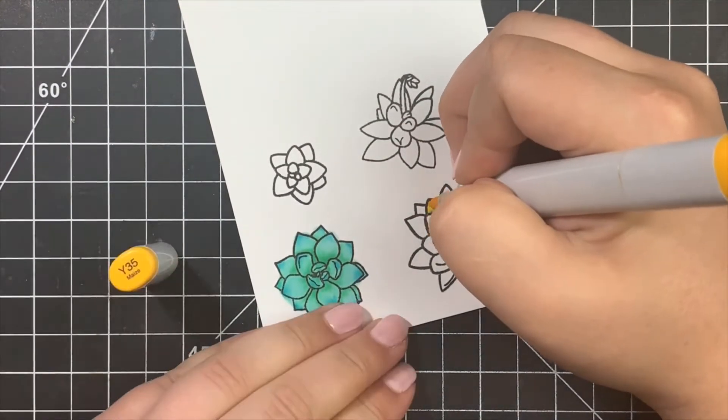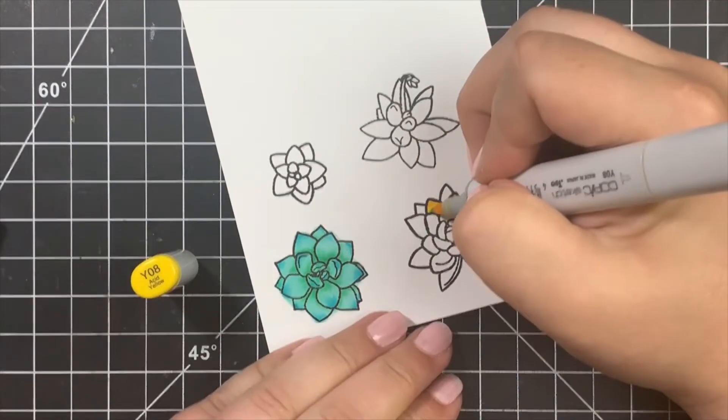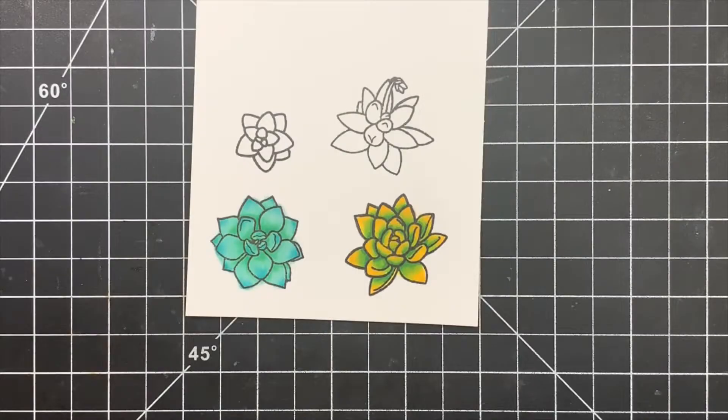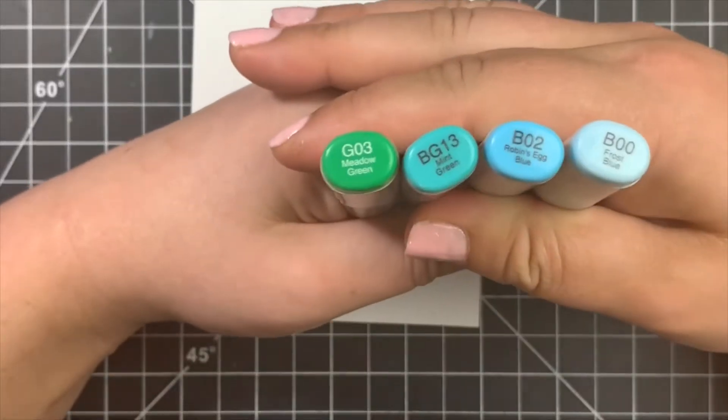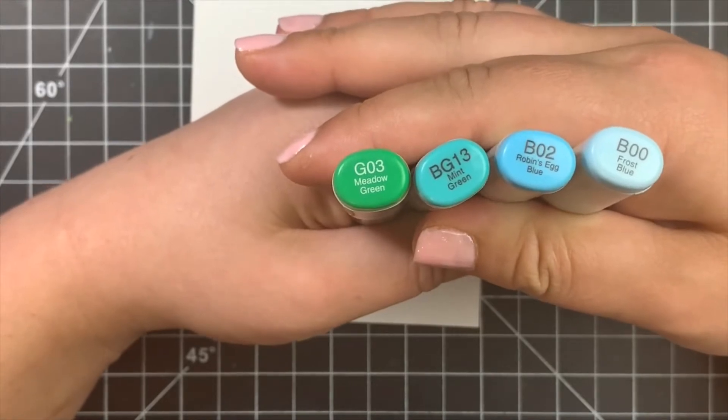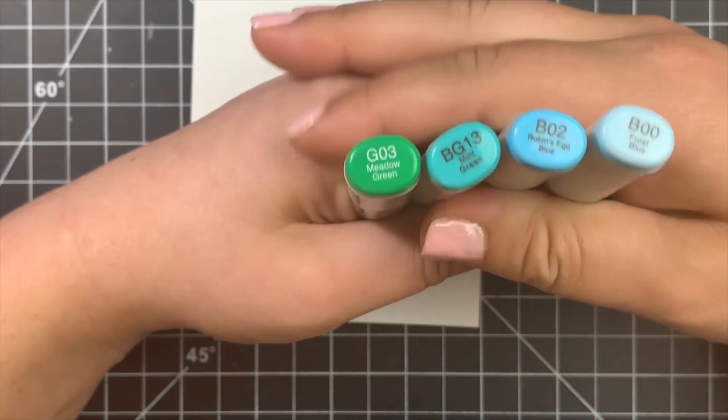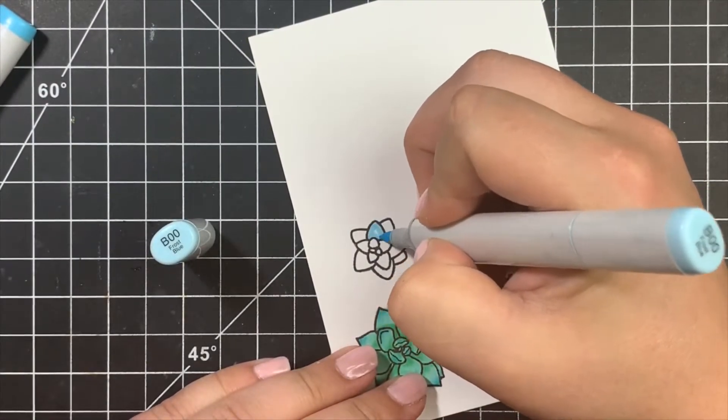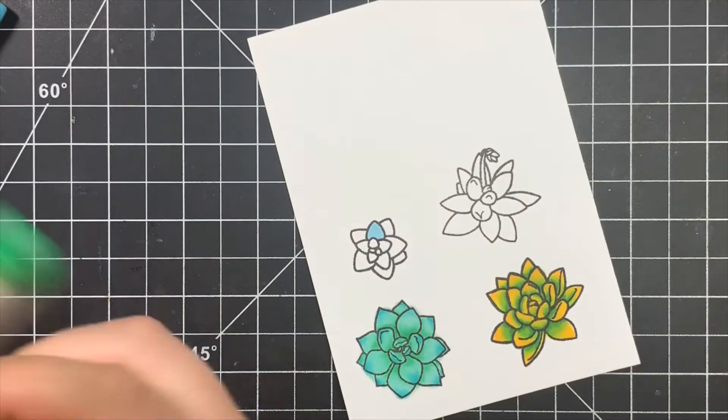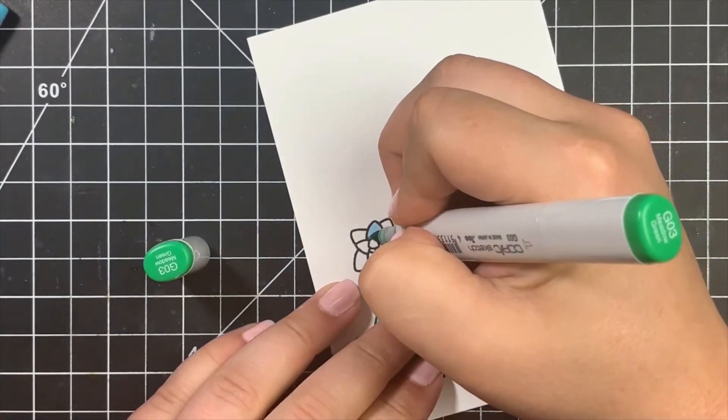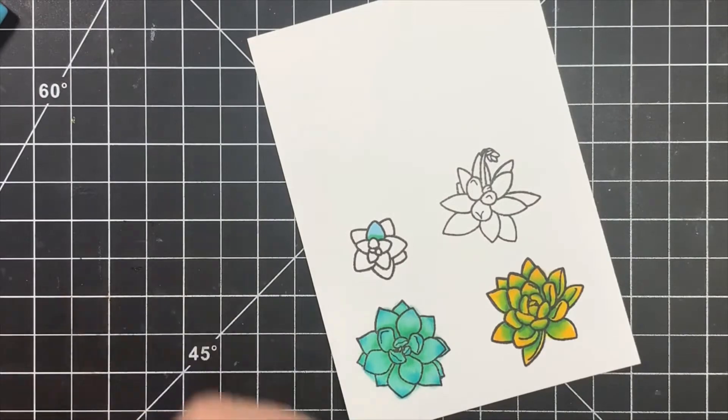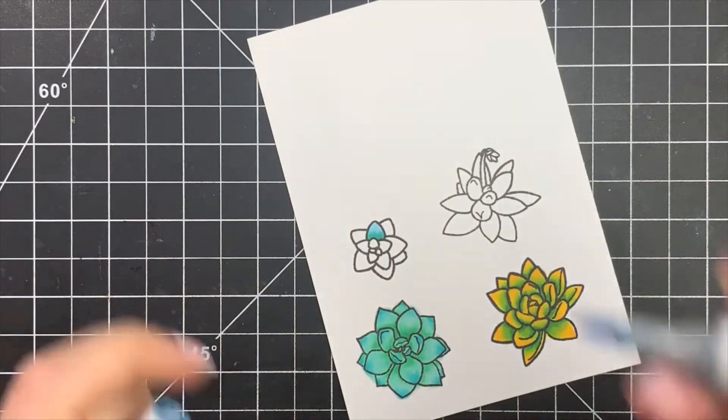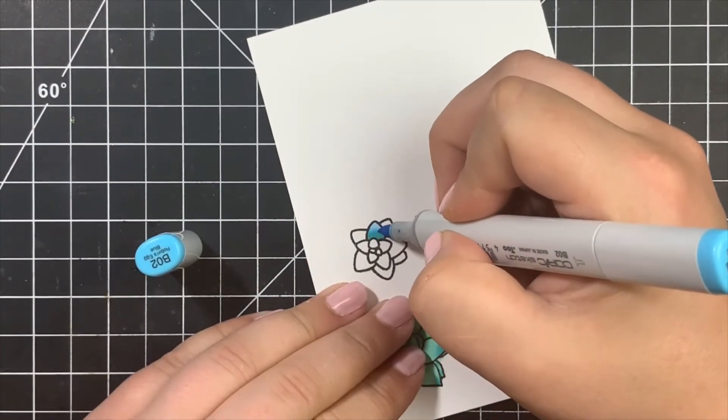Next we're going to move on to the final succulent that I actually used in the card. We are going to use some greens, blue greens, and then move on to the blues. We're going to do this the same way, but this time I'm going to take the B00, which is the lightest color, and cover up the entire petal. I'm just getting the paper saturated; the more it's saturated, the better it'll blend. Adding the green on the very base, blending that out a little bit with the BG marker, then the B02, leaving the very tip for that B00.